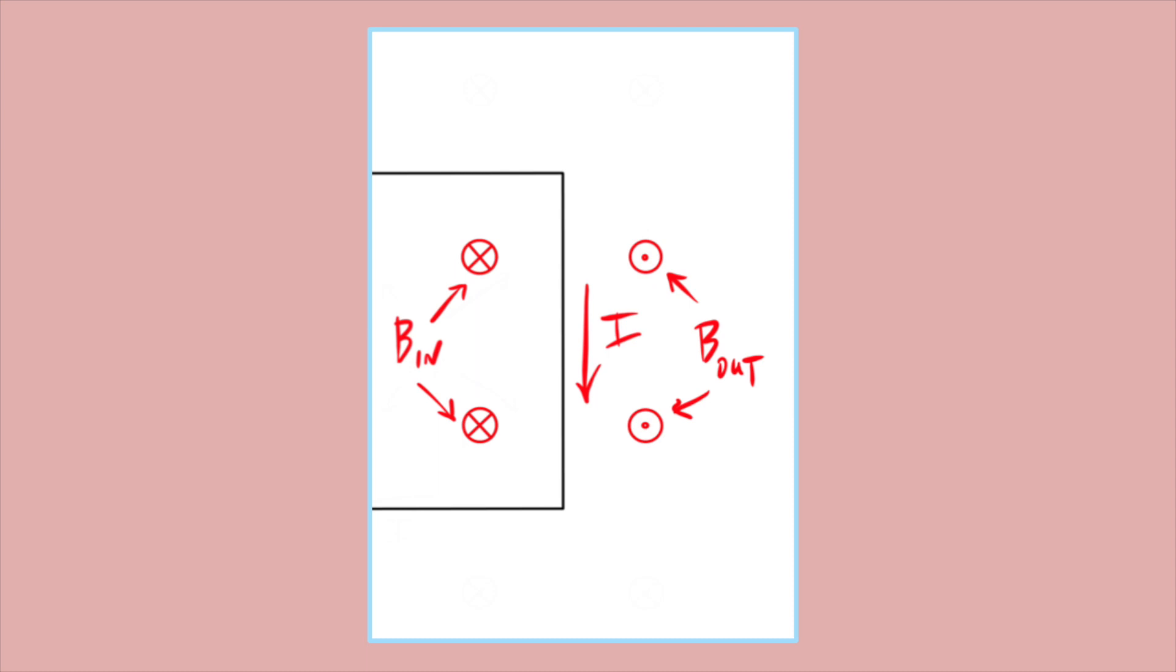Now in physics, sometimes vectors point into the page and out of the page. In mathematics, they call this the z-axis. A vector pointing into the page is represented by a circle with an x inside, kind of like the back of an arrow. A vector pointing out of the page is represented by a circle with a dot inside, kind of like the front of an arrow. You should notice that the right-hand rule is still true in my illustration, even when you just use in and out arrows. Pause the video and see that it's true.